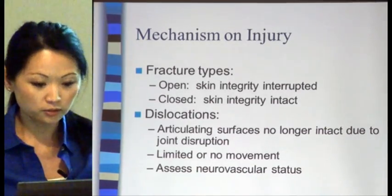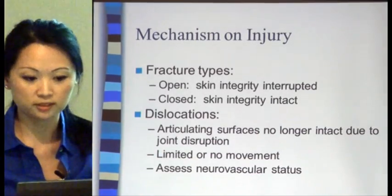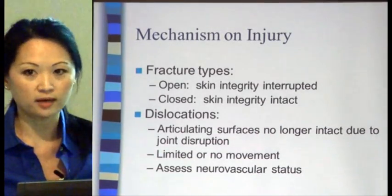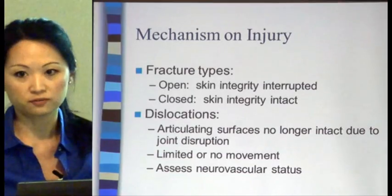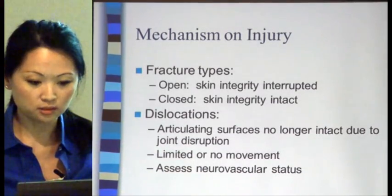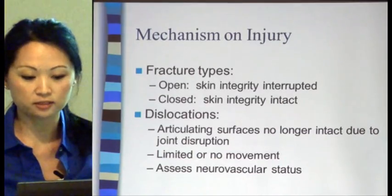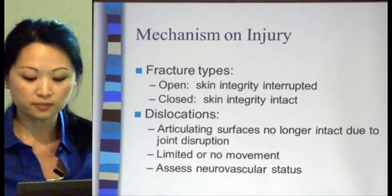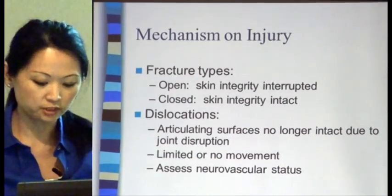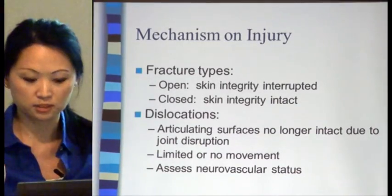Closed fractures are where the skin is not broken, and you may or may not have gross deformity. Then there are dislocations, where the articulating surfaces are no longer intact due to joint disruption — basically where the bone ends are forced out of position.